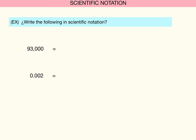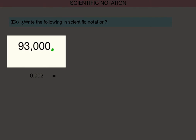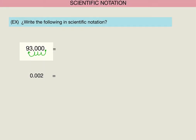Let's work a couple of examples. Take 93,000 and convert it to scientific notation. The rules say you must move the decimal point to the left four places to come up with a number that is less than 10 but greater than one. Moving it four places gives us 9.3, and because we moved it to the left four places, we raise it to 10 to the fourth power.